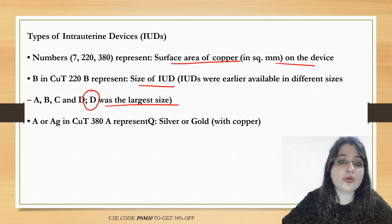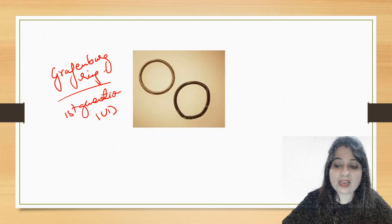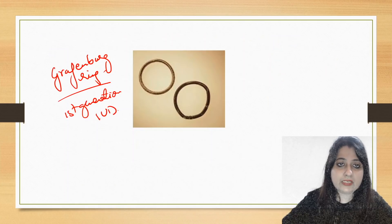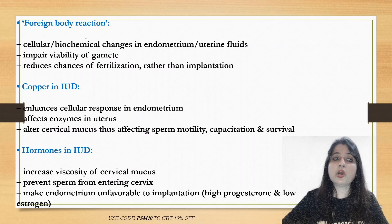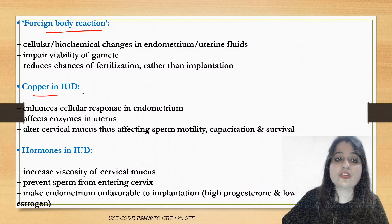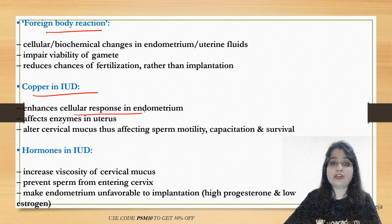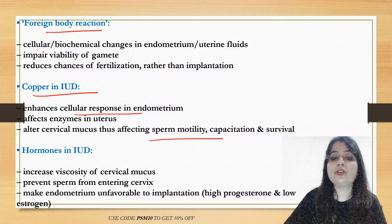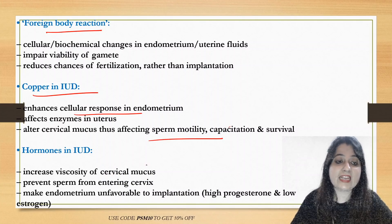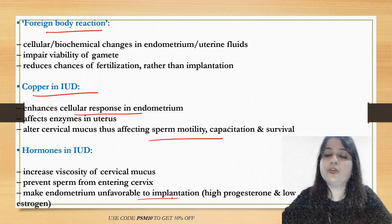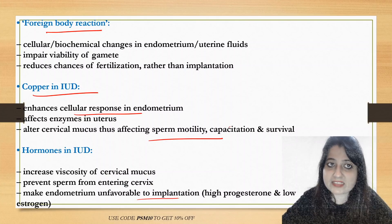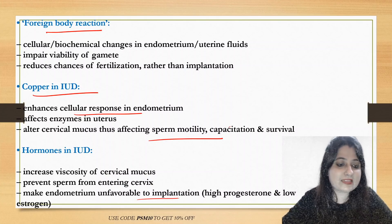Mechanism of action: IUDs act as a foreign body causing biochemical changes in the endometrium, reducing the chance of fertilization. Copper in IUDs enhances cellular response in the endometrium and alters cervical mucus, affecting sperm motility, capacitation, and survival. Hormonal IUDs make the endometrium unfavorable to implantation. This identification of intrauterine devices is very important — many times image-based questions have come on this topic. Thank you so much for watching.